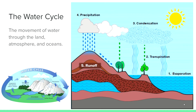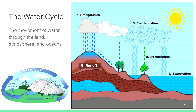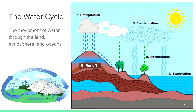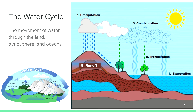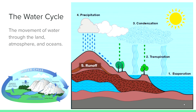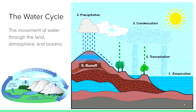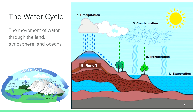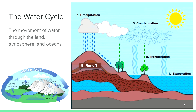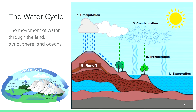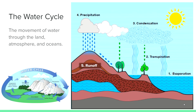The water cycle describes the movement of water through the land, atmosphere, and oceans. Number one shows the evaporation of water from the ocean. Number two shows transpiration, where plants release water from their leaves. Number three shows condensation, where water molecules bunch together to form clouds. Number four shows precipitation in the form of rain. Number five shows the runoff of that water down the mountainside and back to the ocean, where the cycle continues.